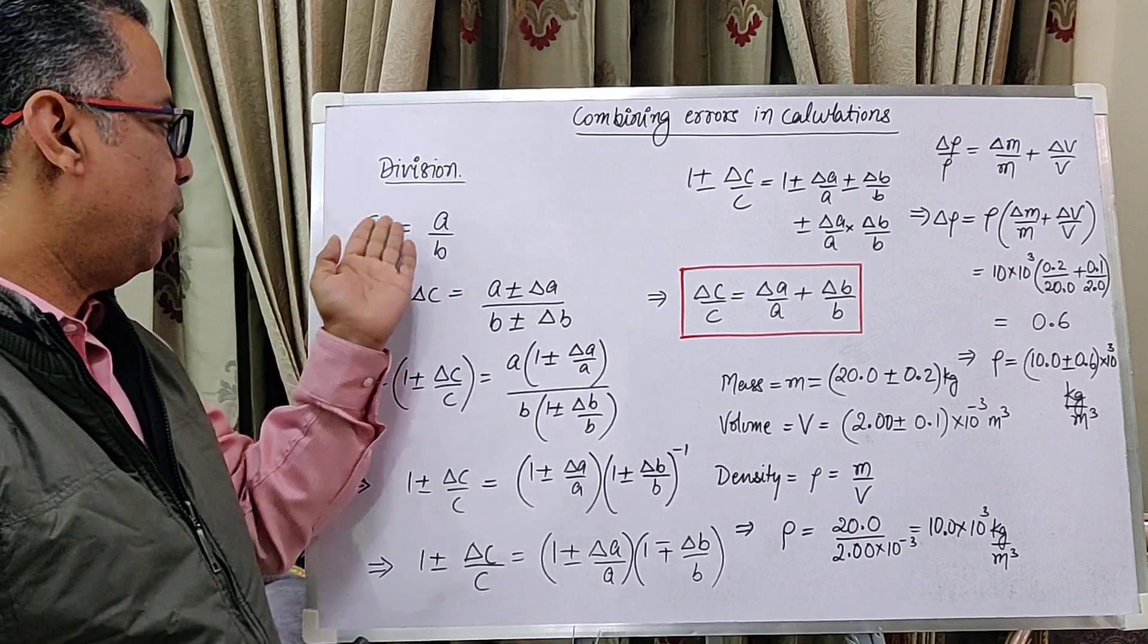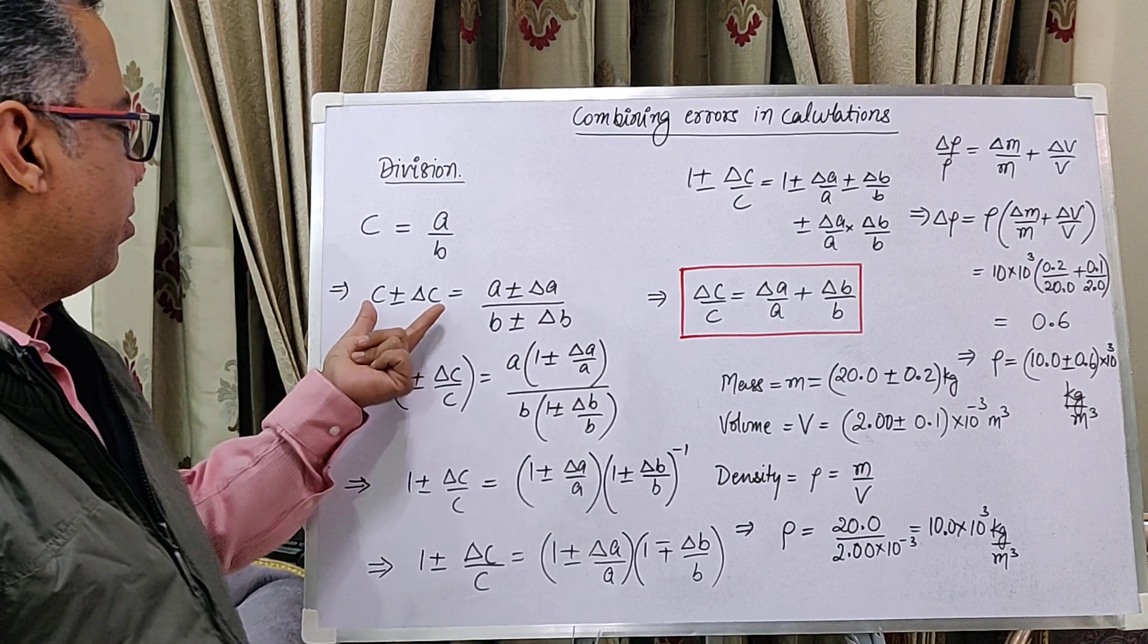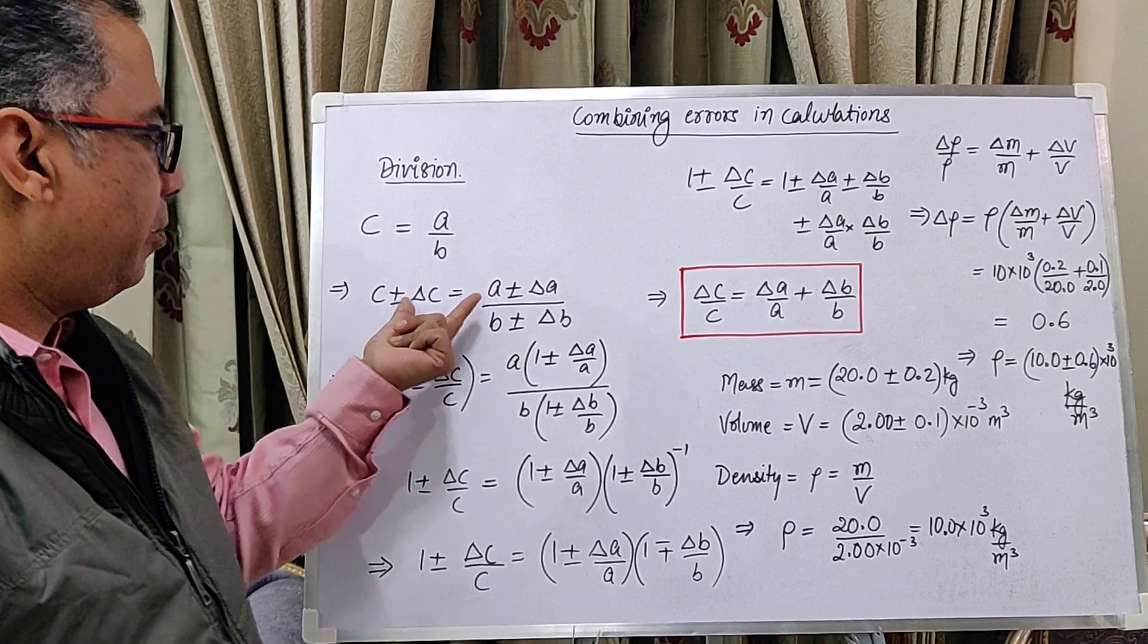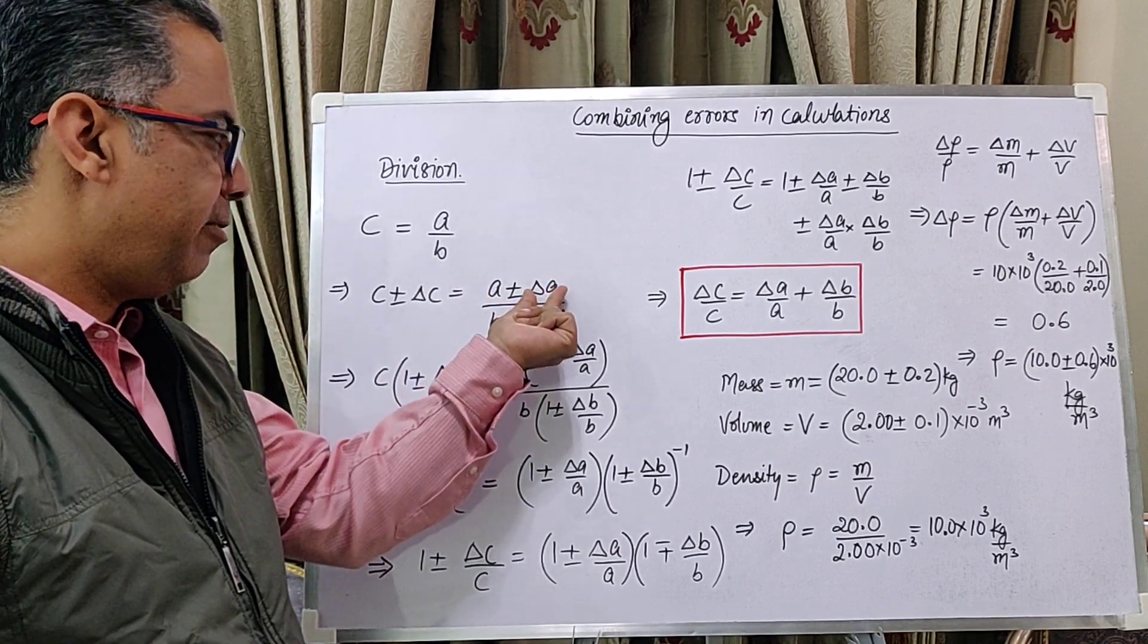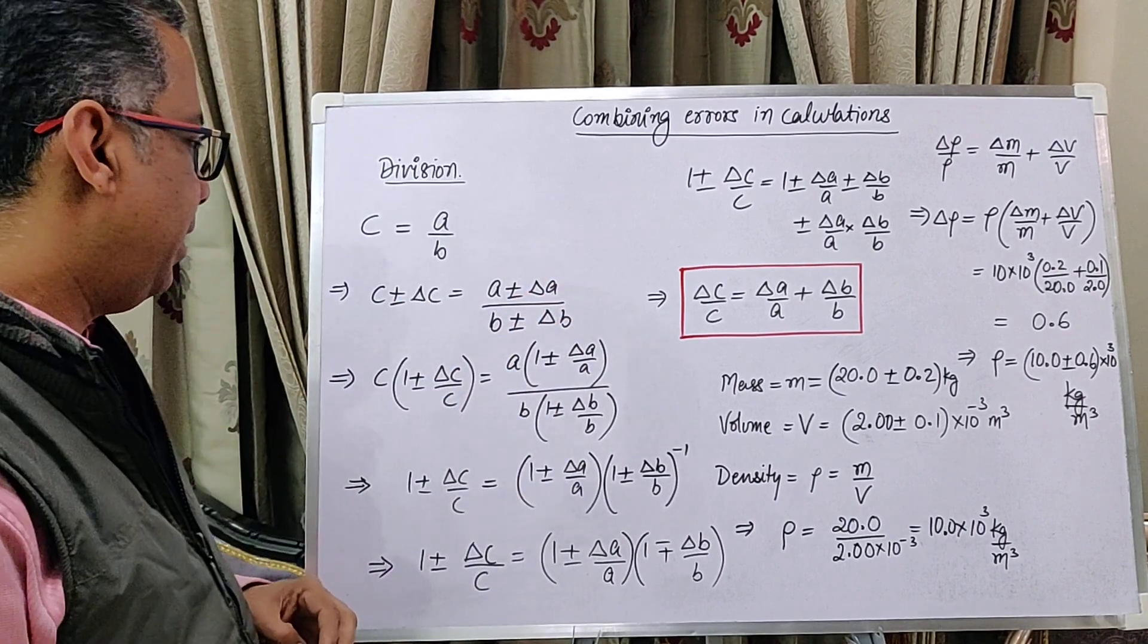We have C which equals A by B, and now therefore C plus minus delta C equals A plus minus delta A. Delta A is error in A, delta B is error in B, and delta C is the error in C.